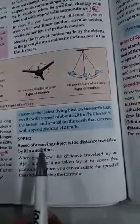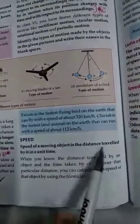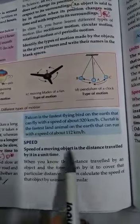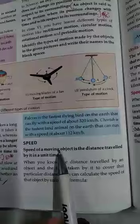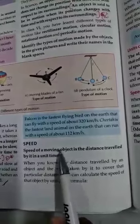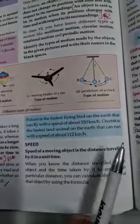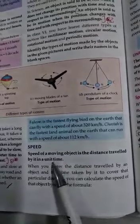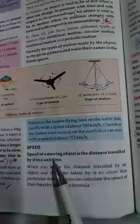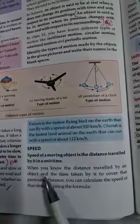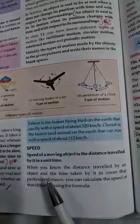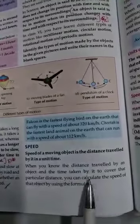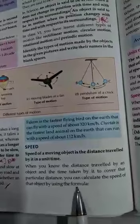Isi tariqe se speed. Speed of a moving object is the distance travelled by it in a unit time. Speed kya cheez hai? Kisi moving object, koi moving object kitna distance travel karta hai, us time ko hum budhte hain. When you know the distance travelled by an object and time taken by it to cover that particular distance, you can calculate the speed of the object.